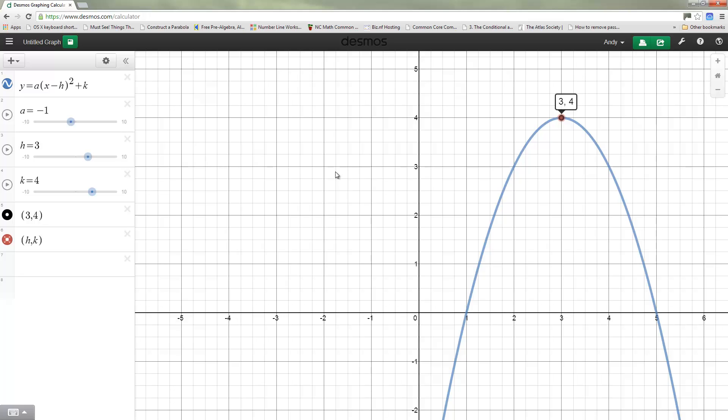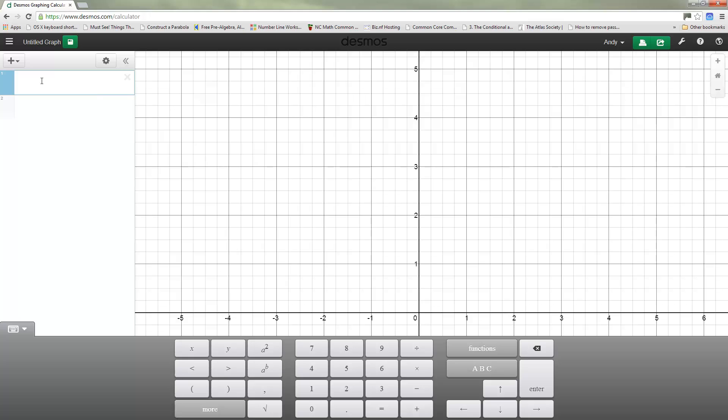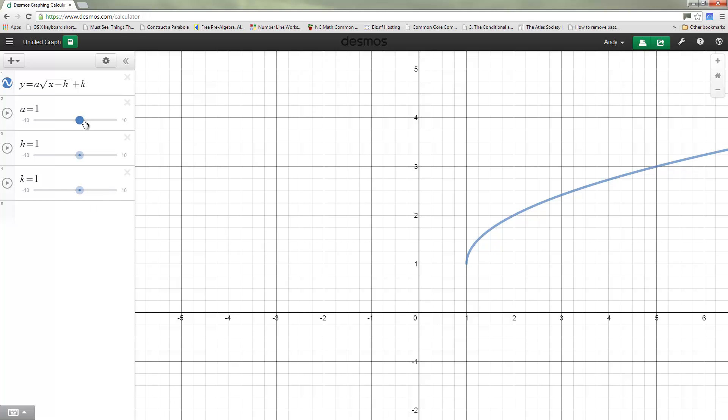This is key for not just a parabola but for any function. Every function works the same way. I could for example do the same thing with a square root graph. Y equals the square root of x minus h plus k. I could even put an A out in front. And I can control shape, whether it goes up or down, I can control horizontal shift and vertical shift.